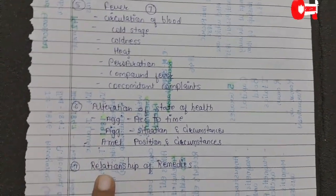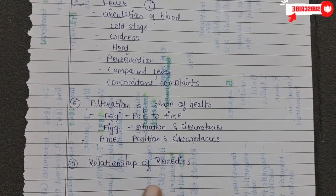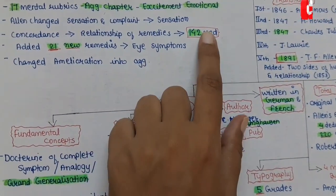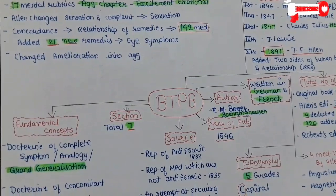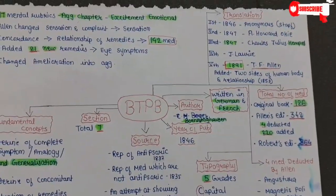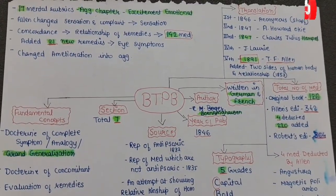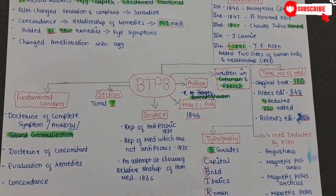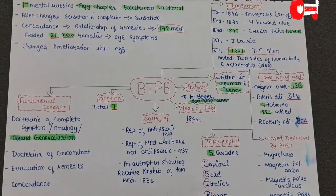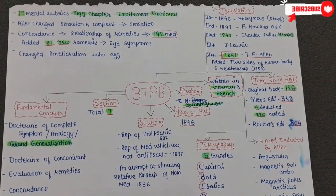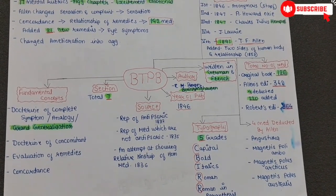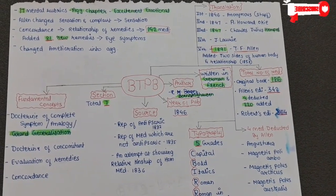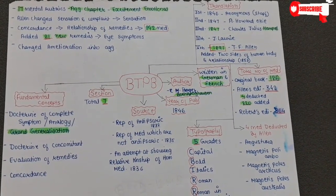The seventh section is Relationship of Remedies, under which 142 medicines are given. You can take a screenshot and read this carefully. Don't get confused — this is all from the original source book so you can rely on it. That was all for today. Thank you, bye.